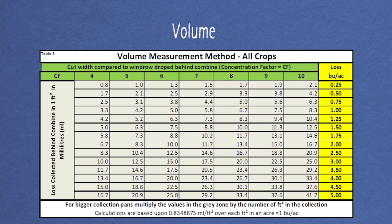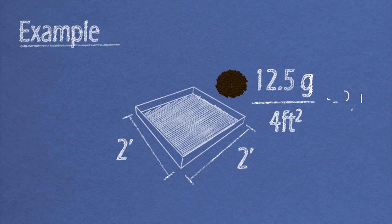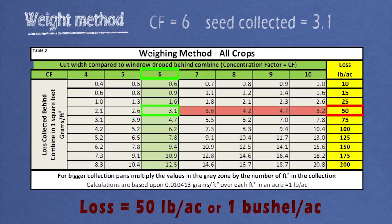For larger pans, just divide the volume or weight collected by the square footage of your pan. Let's say you collected 12.5 grams of canola in a four square foot pan. Divide 12.5 over 4. 3.1 is the number we are looking for under our concentration factor of 6. Slide over to the yellow column and you can see in this scenario, the loss out the back of the combine is 50 pounds per acre or one bushel.